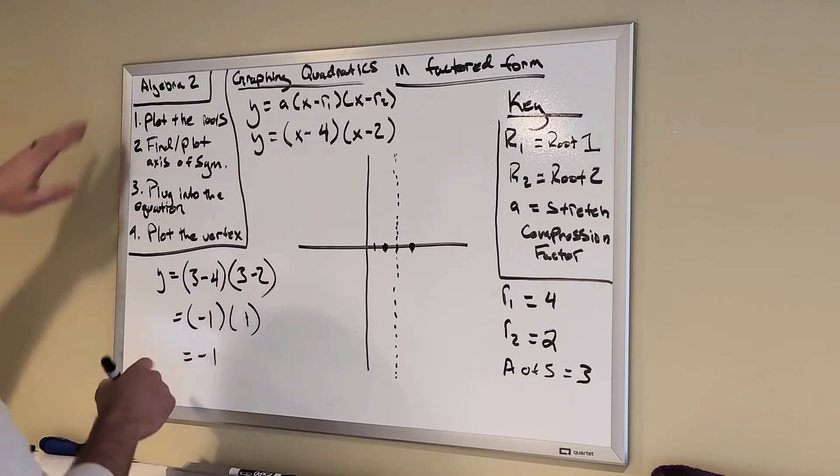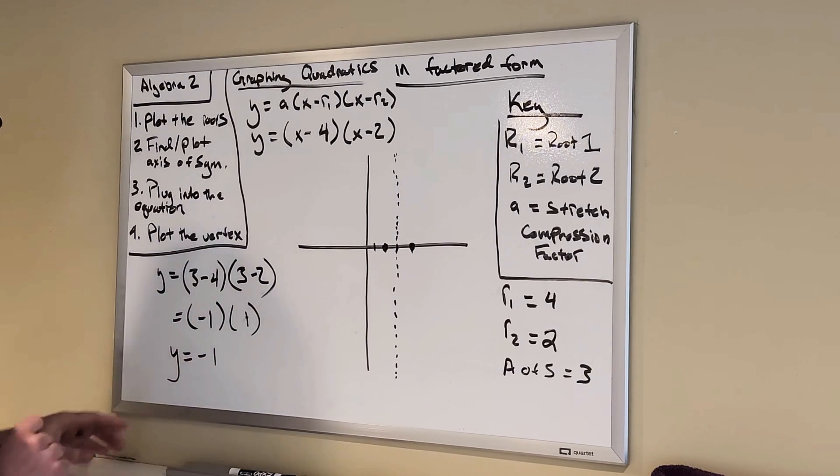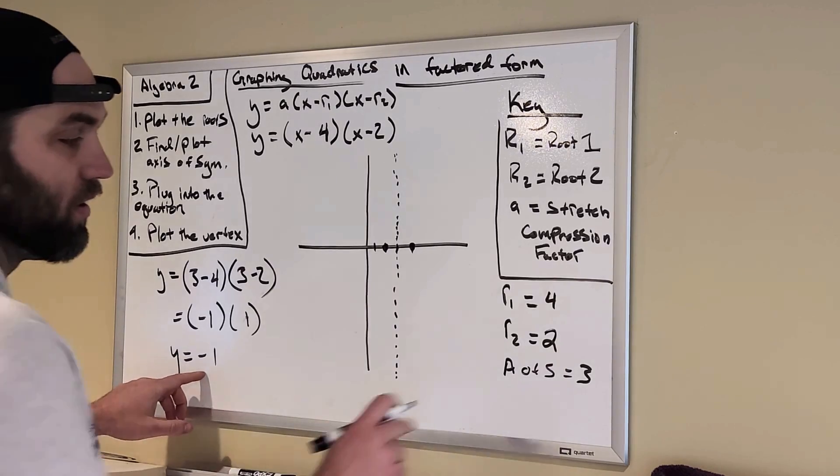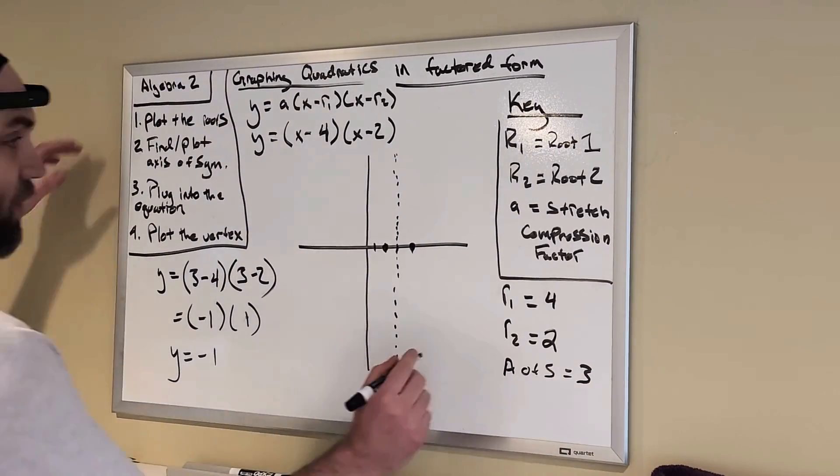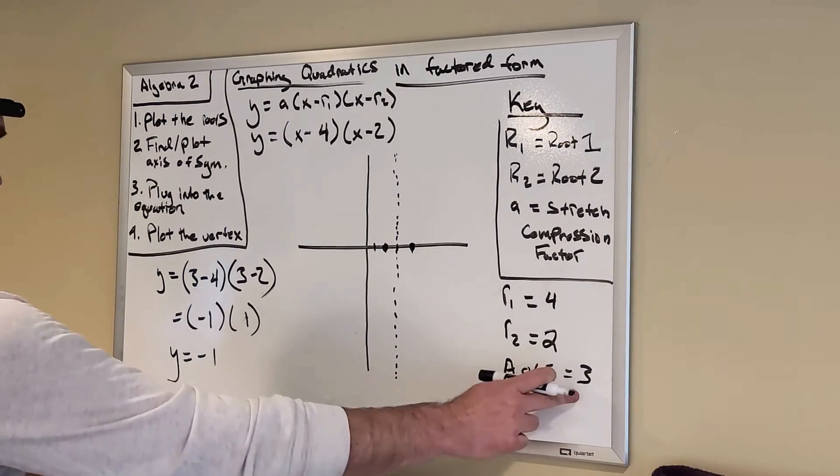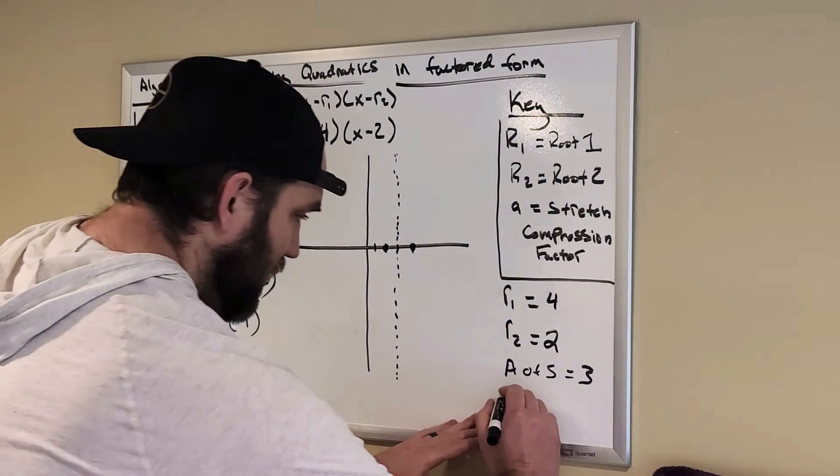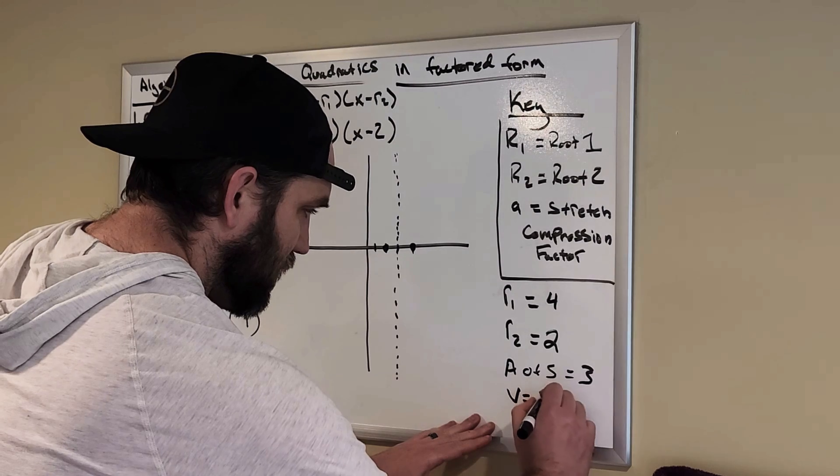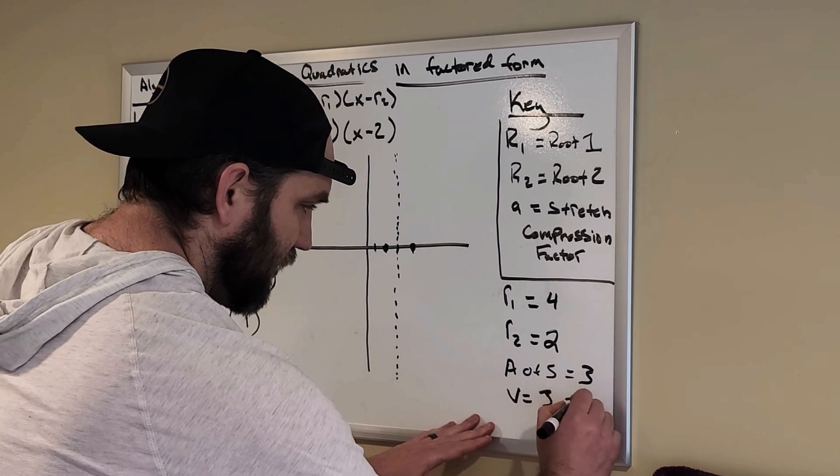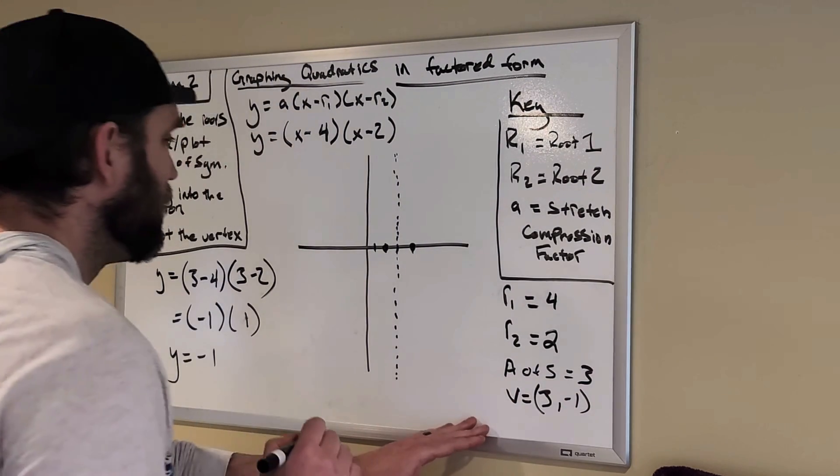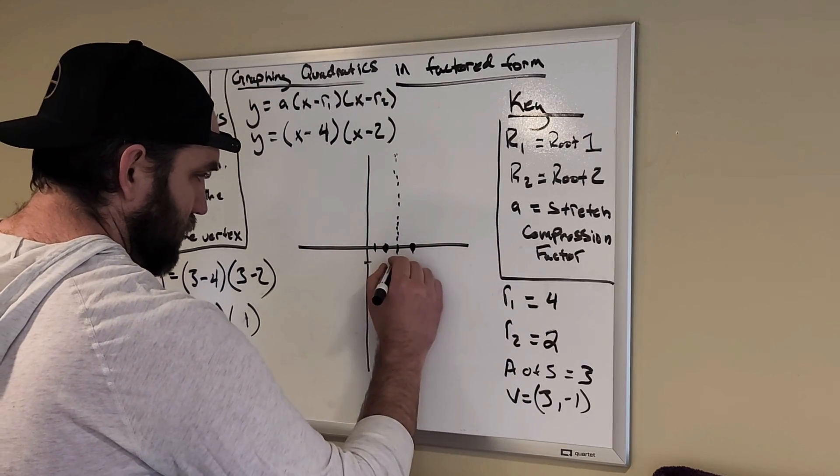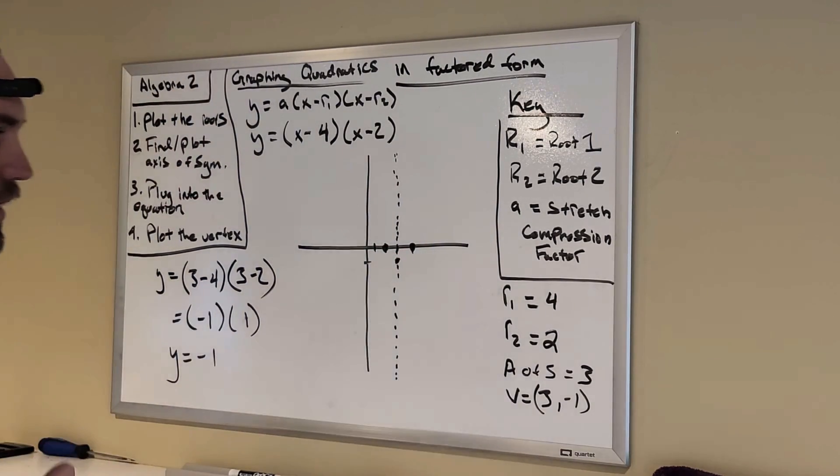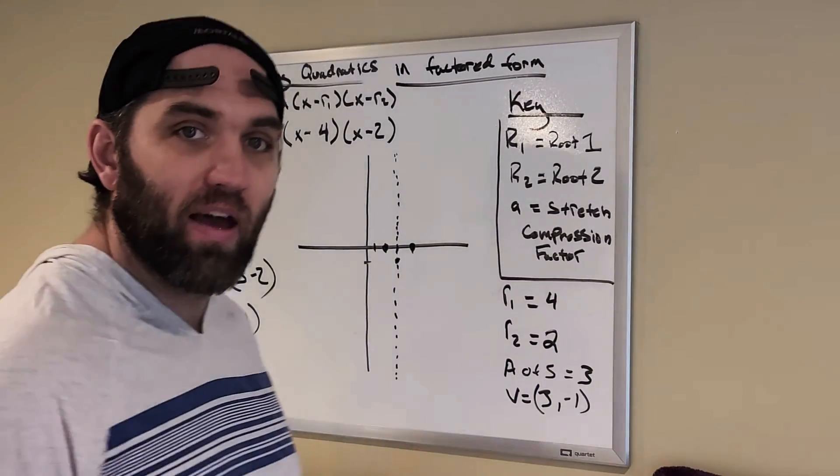So, I know my y value is negative 1 here. My axis of symmetry is my x value, which is 3. So, my vertex here is 3, negative 1. I'm just going to put v equals 3, negative 1. All right. So, over 3, down 1. Right there. So, now I have my vertex. I have two points here.